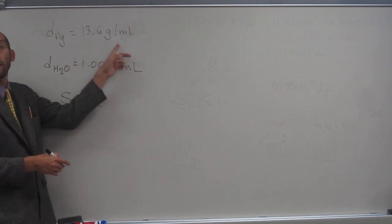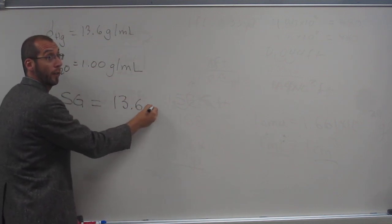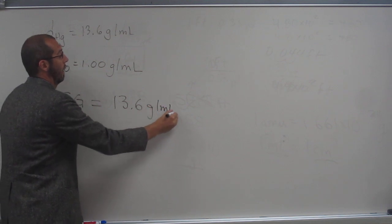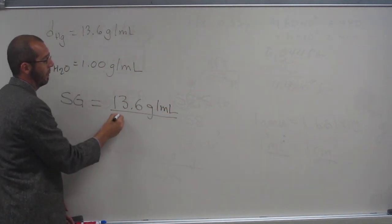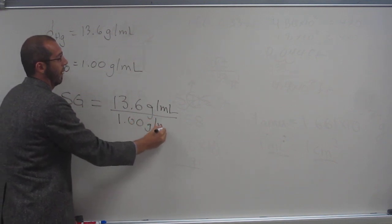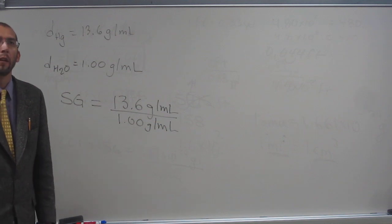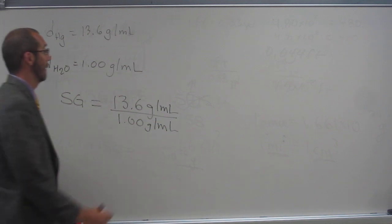So the density of our object is mercury, right, and that's 13.6 grams per milliliter, divided by 1.00 grams per milliliter. So what's my answer here? 13.6.